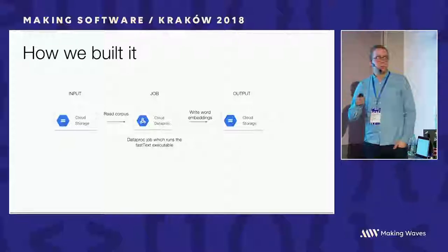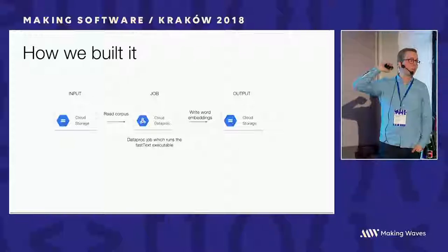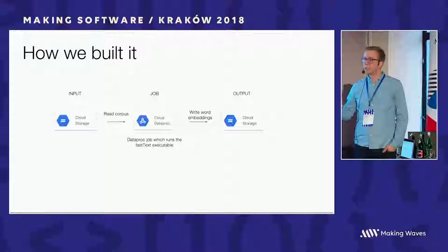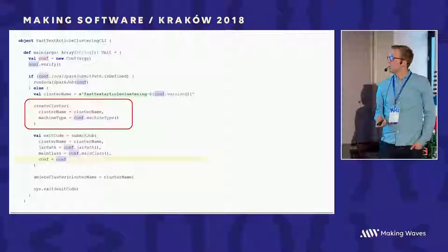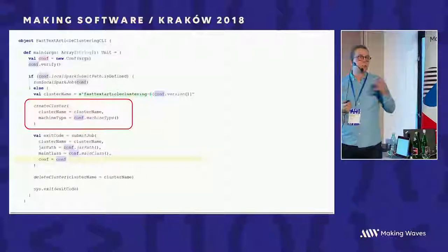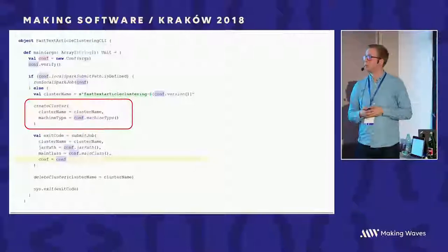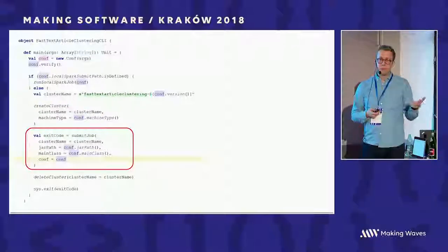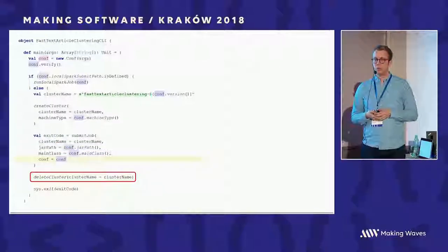When we do it in our pipeline, we read the corpus from Cloud Storage — from the last step. We run the FastText executable in a Dataproc cluster and write the results back to Cloud Storage. For Dataproc, unlike Dataflow where you just create the pipeline and Google does the rest, here we actually need to create a cluster, submit a jar file job to that cluster, and then delete it afterwards. It's a bit more maintenance.